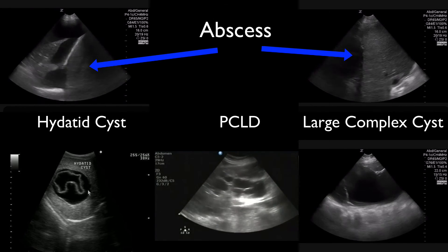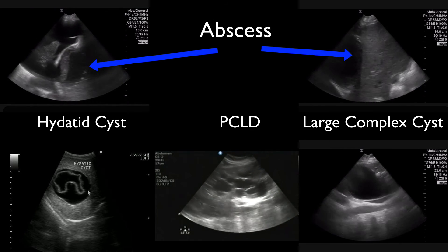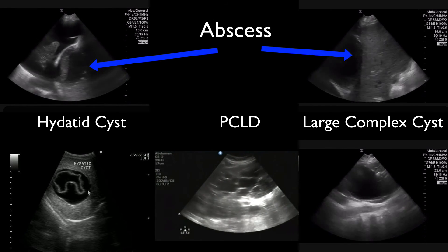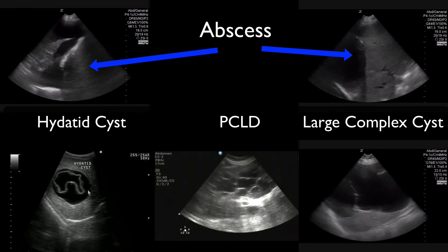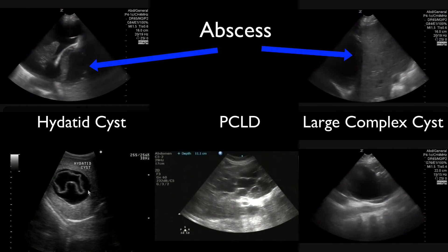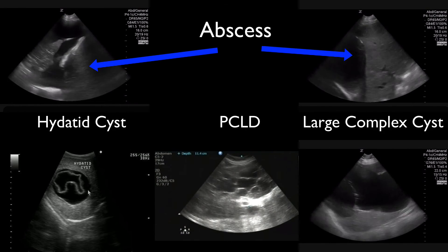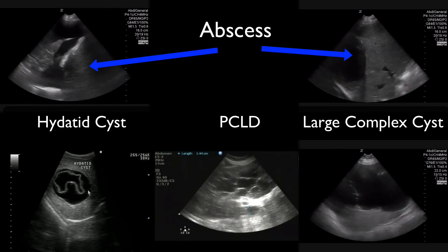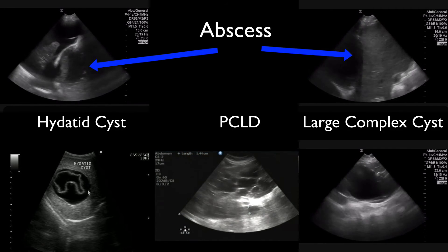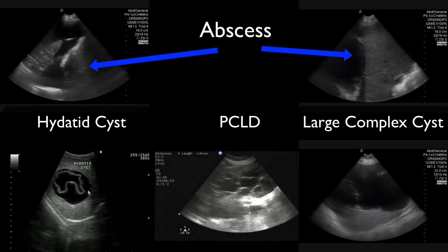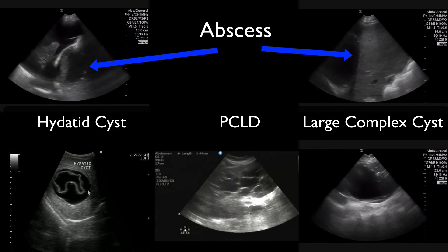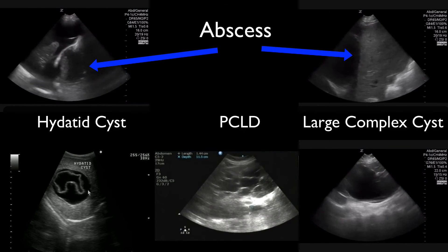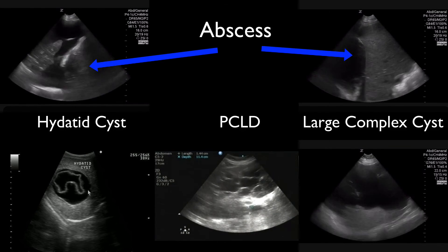If it's not a simple cyst, all the other etiologies are bad. It can be an abscess, polycystic liver disease, a large complex cyst which could represent a mass. You could have multiple masses within the liver with central necrosis looking like cysts, and you could have infectious etiologies that are not bacterial, like hydatid cysts from echinococcus.